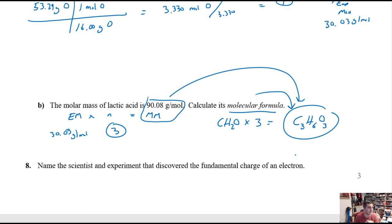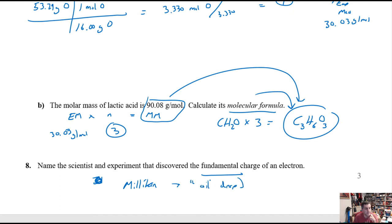The last question on this page asks: name the scientist and experiment that discovered the fundamental charge of the electron. That was Millikan with the oil drop experiment. J.J. Thomson had discovered the electron and determined the mass-to-charge ratio, but the fundamental charge didn't come until Millikan. His oil drop experiment allowed him to determine the fundamental charge, which then allowed calculation of the actual mass of the electron — another nod to the historical experiments covered in class.